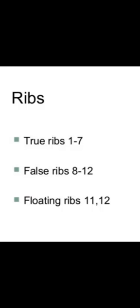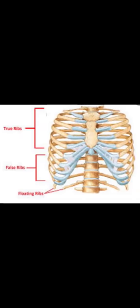To summarize: true ribs are pairs 1 to 7, false ribs are pairs 8 to 10, and floating ribs are pairs 11 to 12. Floating ribs are absolutely not attached to the sternum, as you can see in the diagram.